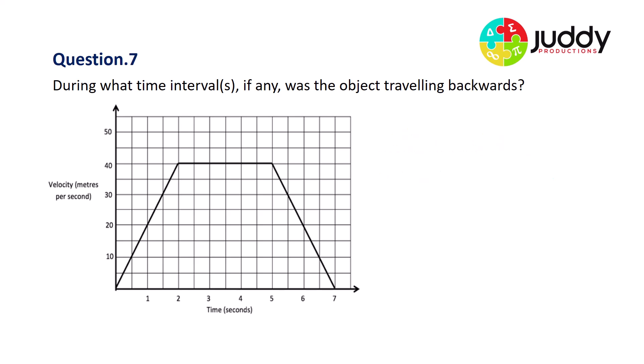And finally, question seven, during what time interval or intervals, if any, was the object traveling backwards? The object was never traveling backwards for the duration of the journey. The line was never below the x-axis.